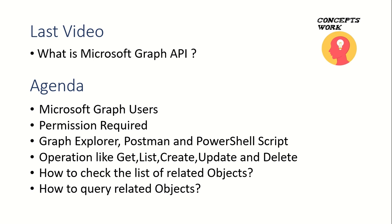What do I mean by the related object list? It's a very huge entity system wherein every object is related to some other object. I'll show you how to check what all attributes can be queried and what all related objects can be queried. There is a certain prerequisite which I need from you.